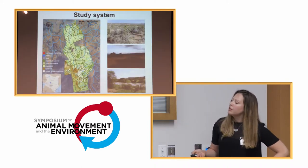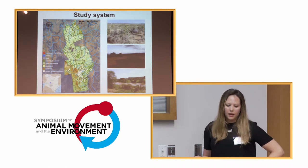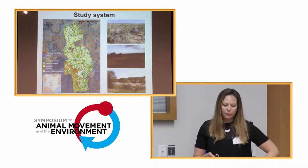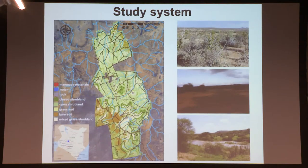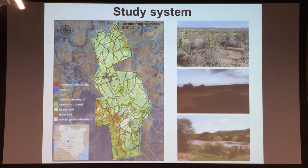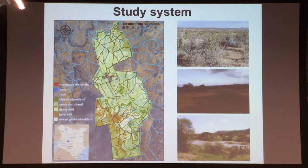All field work was conducted at Mpala Research Center in central Kenya. We have a coarse land cover classification of this property on the left and a couple of snapshots of what the landscape looks like on the right. Vegetation varies from very open, sparse red soils to very complex, vertically structured habitat — not in the same sense as tropical rainforest, but with a two to four meter tall canopy, very short sub-canopy and herbaceous layer. The most complex vegetation is found in the riparian areas.